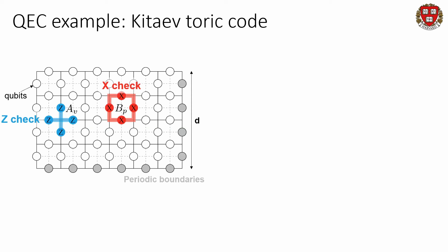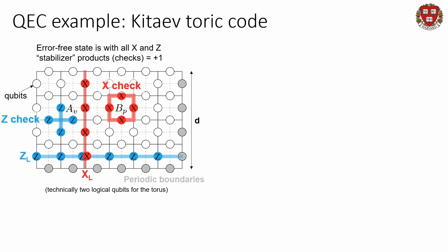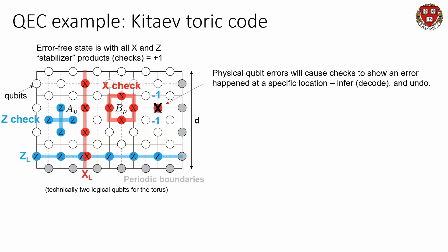A classic example is the toric code — a paradigmatic example of quantum error correction. We have qubits on a 2D lattice with periodic boundaries. The error-free state is the state where all of the stabilizer products, or checks, are simultaneously equal to plus one. These checks are given by four-body products of X on plaquettes and Z on stars of this lattice. In this error-free state, you can read out the logical qubit degree of freedom by looking at strings — vertical and horizontally propagating strings on this lattice.